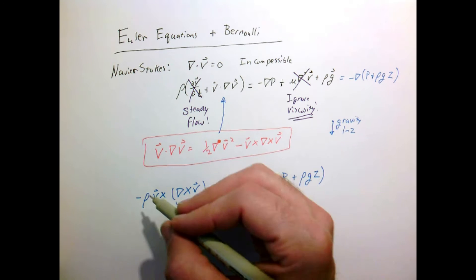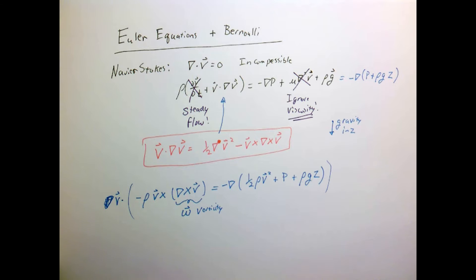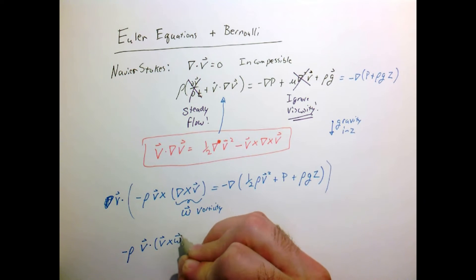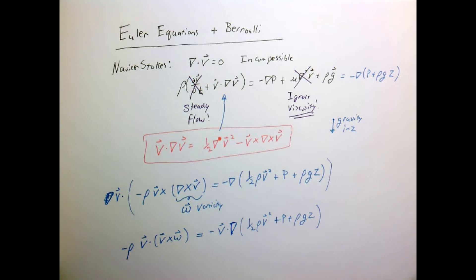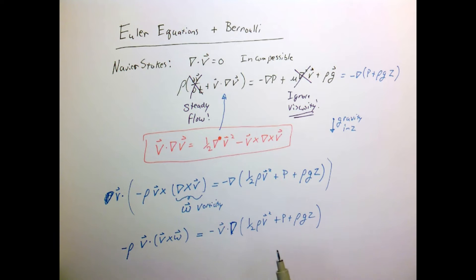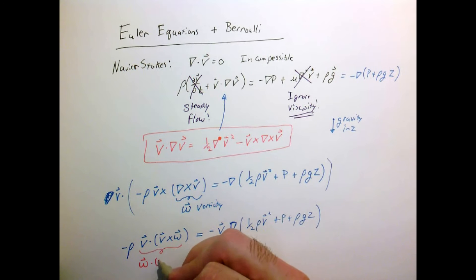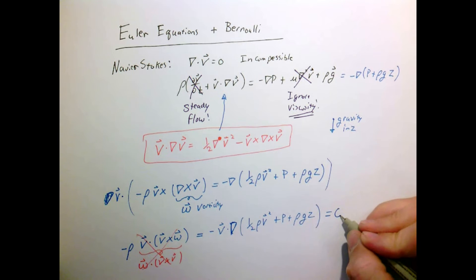Now let me do something that might seem a little strange: take the velocity vector and take the dot product with the whole equation. Because density is constant, I can write this as minus rho times v dot... Now, I have v crossed with another vector, which gives something perpendicular to v, so when I take the dot product of v with that term it equals zero. By a vector identity, this can be rewritten as omega dot (v cross v), and since a vector crossed with itself is zero, this whole term goes away.